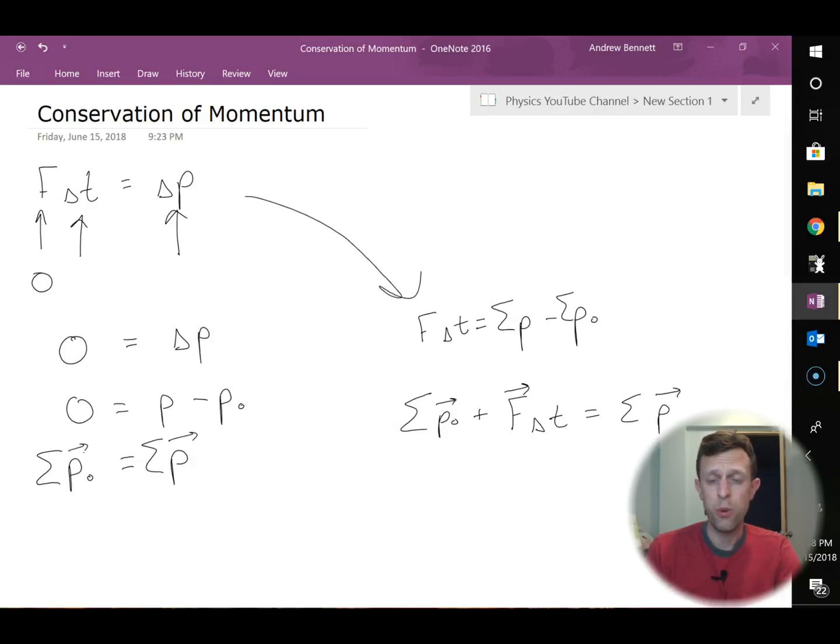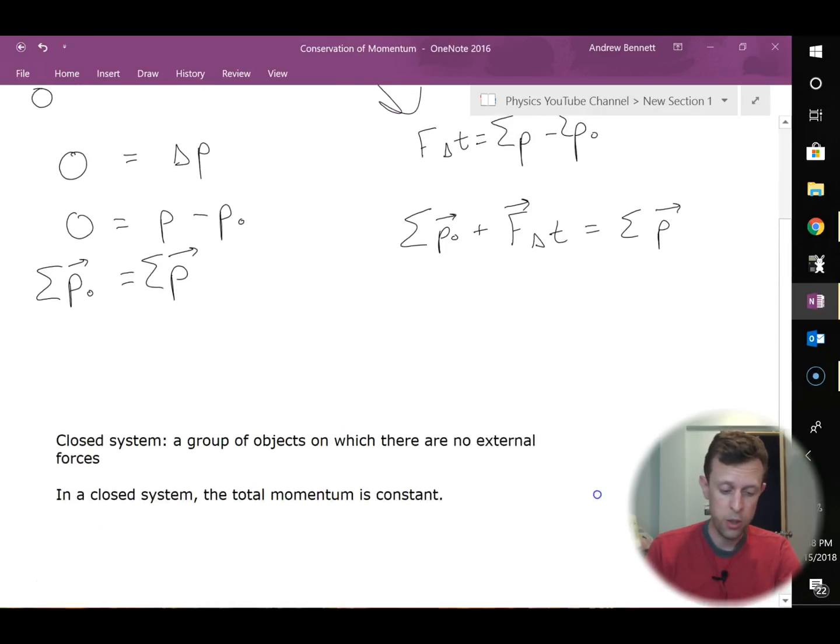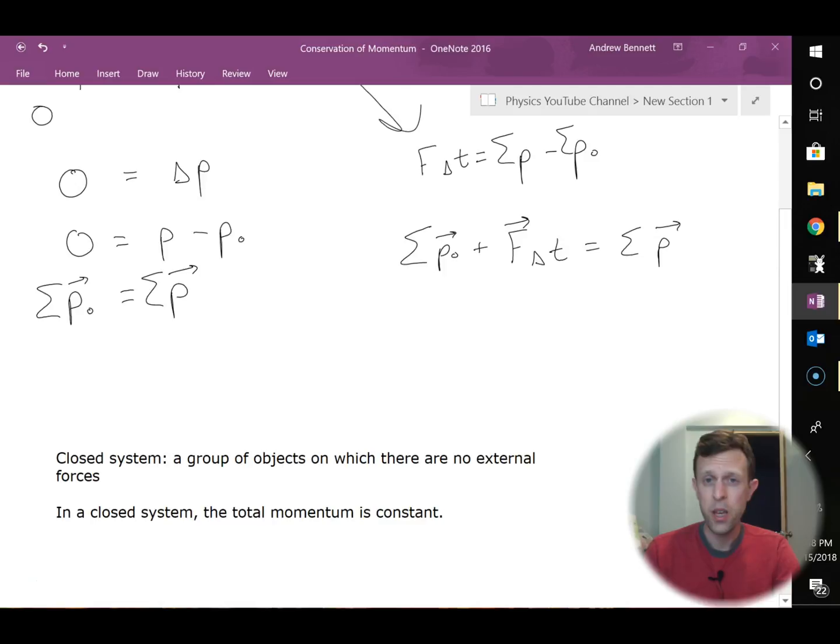Now, if we have a system where there are no external forces acting, we call that a closed system. And so sometimes in a physics problem, they won't say this is a system where there are no external forces. They might just say this is a closed system. So we ought to be able to recognize what that means for our calculations. It just means that total initial momentum and total final momentum are going to be the same value on these.